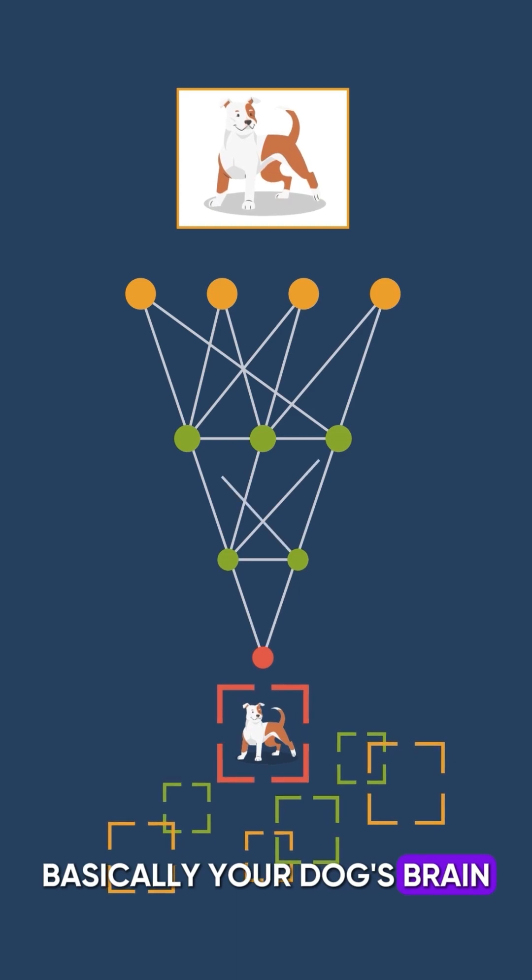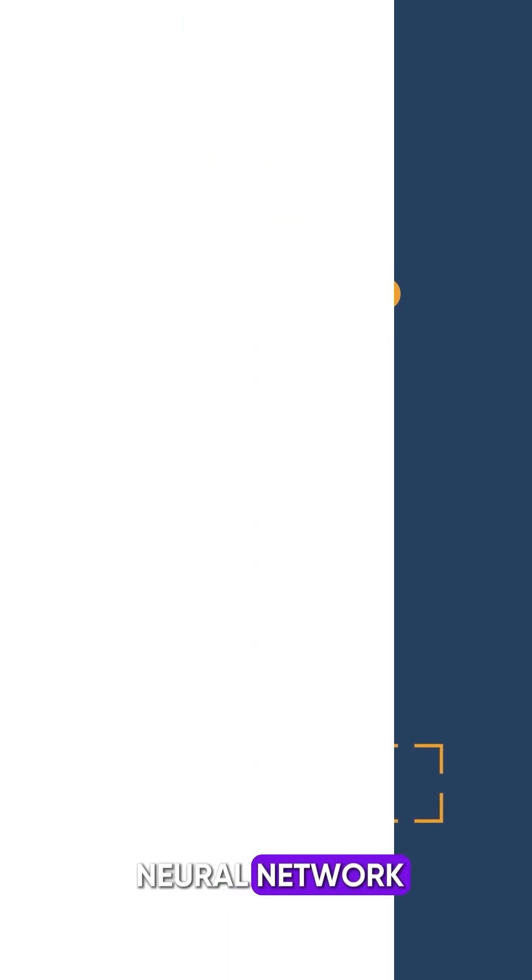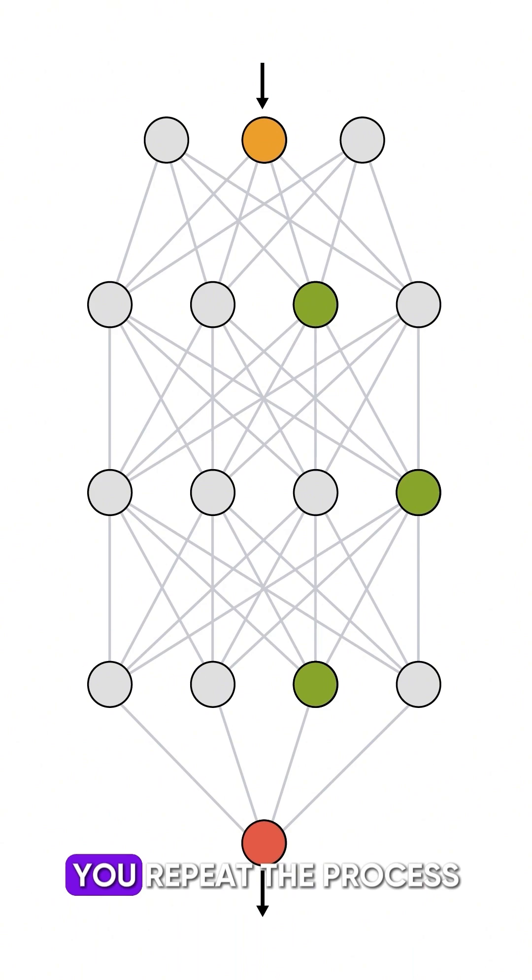Basically, your dog's brain looks like this. We call this a neural network. When you're teaching your dog to fetch, you repeat the process multiple times, throw the ball, get them to grab it, and then bring it back.